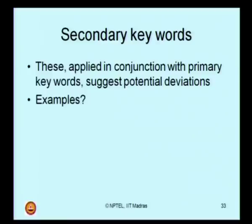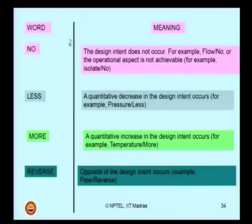What are the list of secondary keywords? How can we combine them with the primary keywords? Can we combine all possible secondary keywords with all probable primary keywords? What are the successful combinations? What are meaningless combinations? To answer that, let us look at some examples of secondary keywords. I have selected certain secondary keywords and I am trying to associate certain meaning of the secondary keyword when combined with the primary keyword.